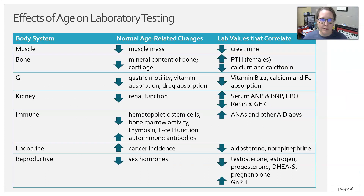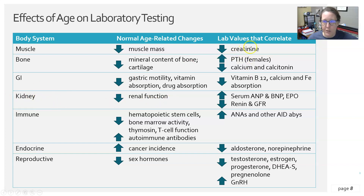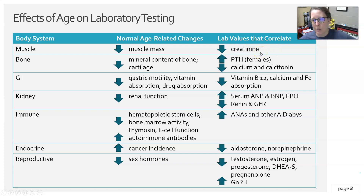Looking specifically at different body systems and their correlating lab values: in the musculature system, there is a decrease in muscle mass, which translates into a decrease in creatinine. This is often compensated by an increase in creatinine from declining kidney function. Early on, creatinine levels can drop as muscle mass is lost, but as renal function declines, creatinine levels go back up.